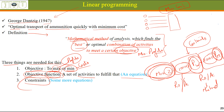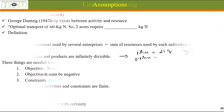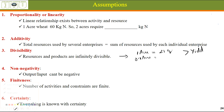Now we will study some assumptions of Linear Programming to keep in mind before employing this technique. The first assumption is Proportionality or Linearity: there is a linear relationship between activity and response, meaning output and input. For example, one acre of wheat needs 60 kg of nitrogen, so two acres require 120 kg. The relationship remains linear — not quadratic or cubic. Even at 200 acres, it will be 12,000 kg of nitrogen.